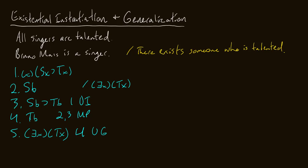With existential generalization, it doesn't matter if you have a constant like B, or if you had universally instantiated to a variable — we can existentially generalize both constants and variables to a variable. In this case it happened to be more convenient to universally instantiate to a constant and then generalize, but it might be more convenient to universally instantiate to a variable and then existentially generalize.